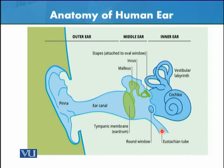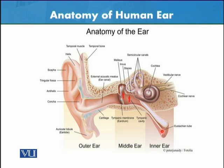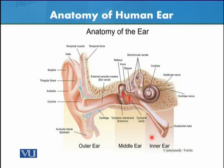This is another diagram of the human ear — a model diagram showing the anatomy. The external ear leads through the ear canal to the tympanic membrane, and then there are three important bony structures: the semicircular canals, the cochlea, and so on, as shown diagrammatically in the previous slide.